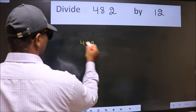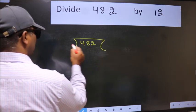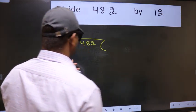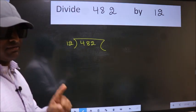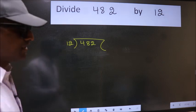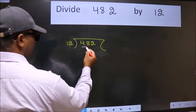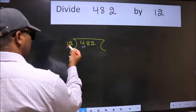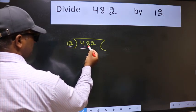482 here, 12 here. This is your step 1. Next, here we have 4 and here 12. 4 is smaller than 12, so take two numbers, 48.